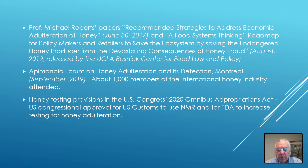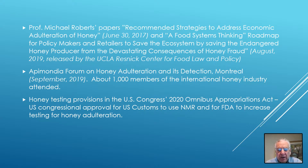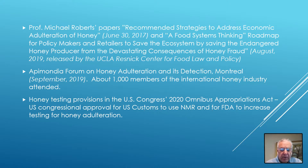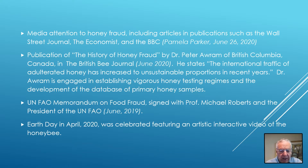The Apimondia Forum on Honey Adulteration, held in September 2019 in Montreal, had 1,000 members attending — the largest such meeting in the history of the honey industry. It was a real inflection point, because those who had opposed nuclear magnetic testing and supported modes of adulteration — adding bioengineered sweeteners, using resin technology, extracting immature honey before it's been transformed from nectar — became totally isolated and were compelled to change their position.